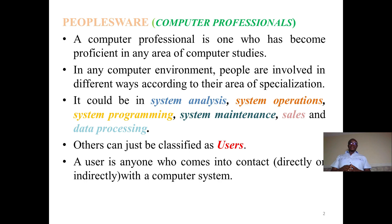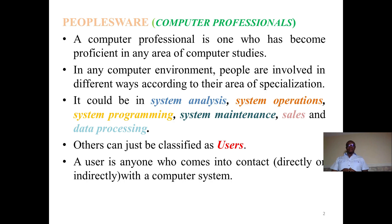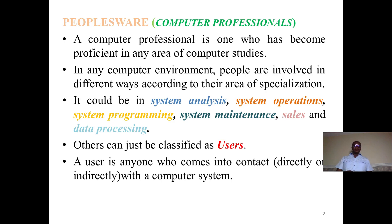A computer professional is one who has become proficient in any area of computer studies. In any computer environment, people are involved in different ways according to their area of specialization. It could be in system analysis, system operations, system programming, system maintenance, sales, and data processing. Other users outside these stated ones are classified simply as users.